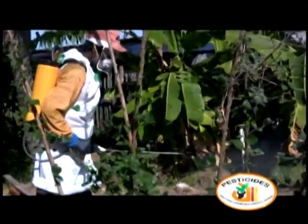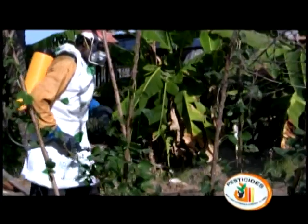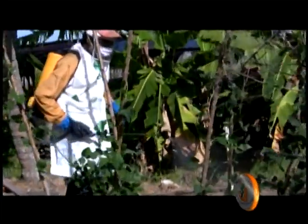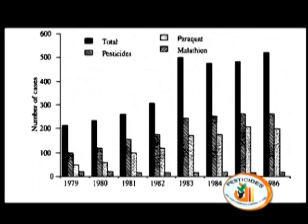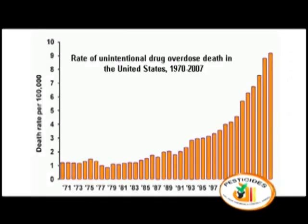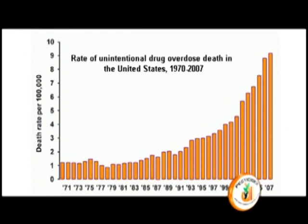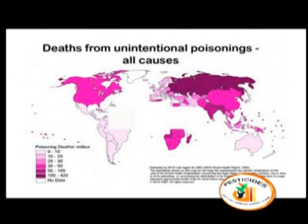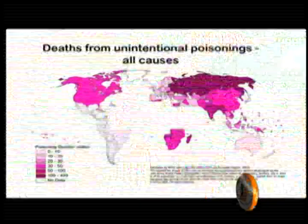For many agricultural workers and their families, pesticide exposure is a serious concern. Each year, as many as 25 million agricultural workers in developing countries may suffer from unintentional acute pesticide poisonings. The majority of agricultural pesticide poisoning and injury happen through skin exposure and absorption.